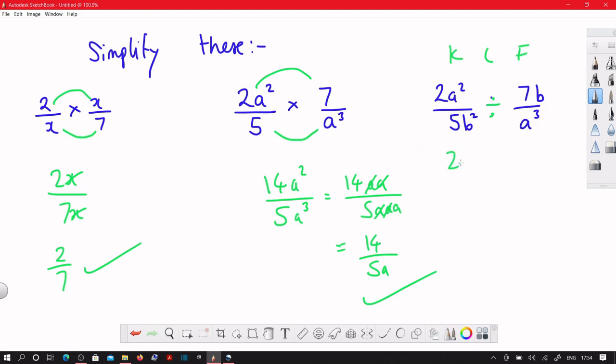So here, we leave this one, we keep this one as it is. Change the division to a times and then flip the last one. The a³ comes to the top and the 7b goes to the bottom.